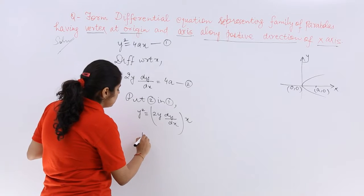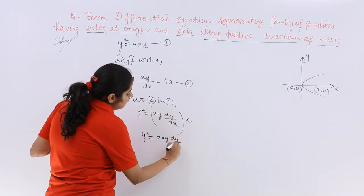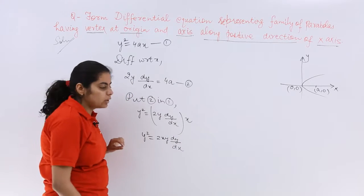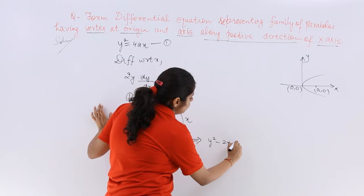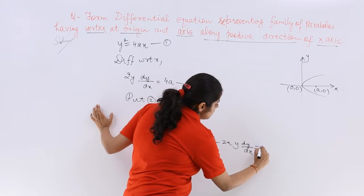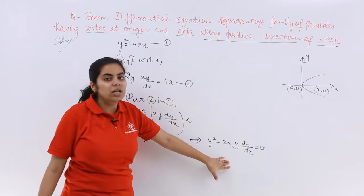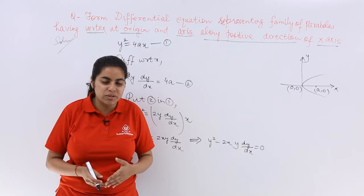Let's cancel if something cancels. We find nothing cancels. So let's just simplify it. y² = 2xy dy/dx, or what can be written as y² - 2xy dy/dx = 0. And this is the equation which is required and hence we know how to solve this kind of question.